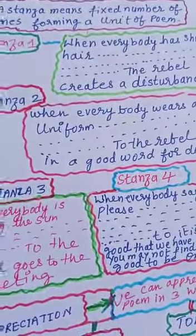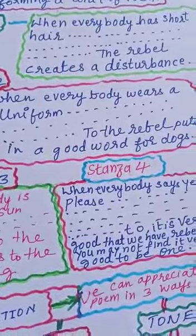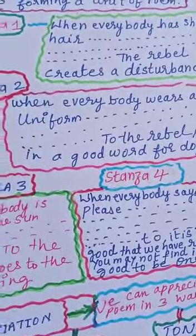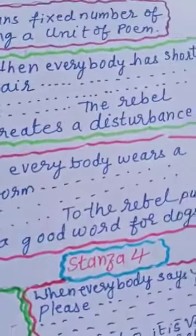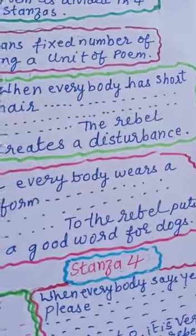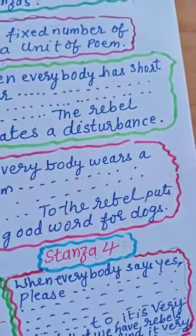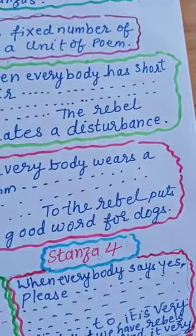Stanza one: When everybody has short hair, the rebel lets his hair grow. When everybody has long hair, the rebel cuts his hair.